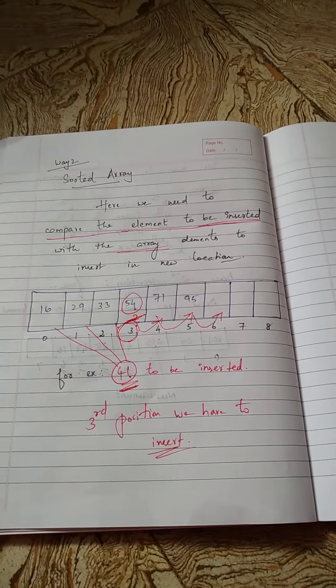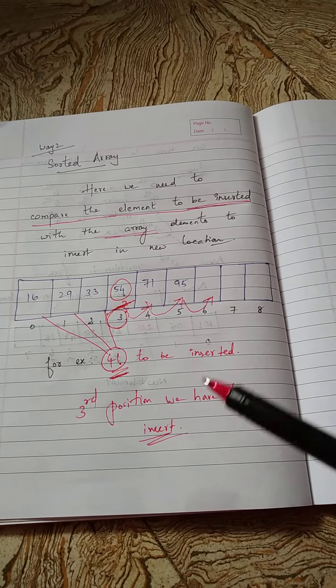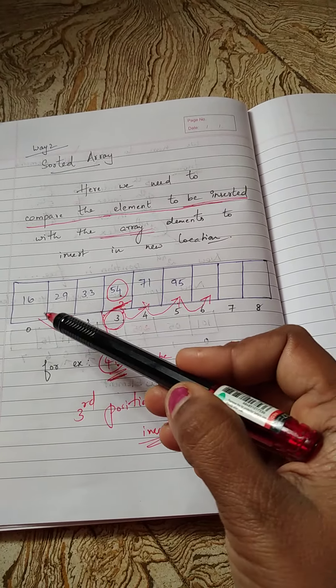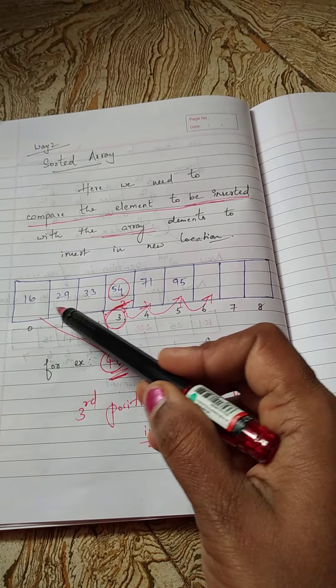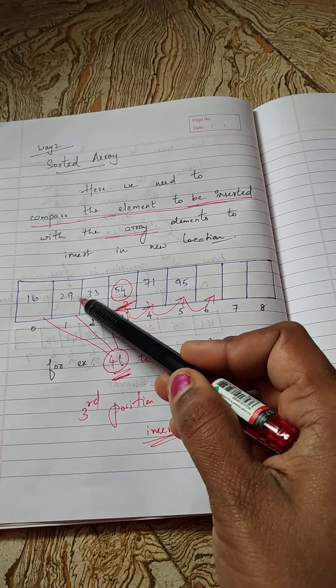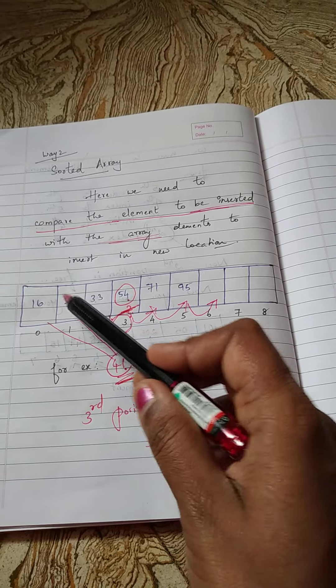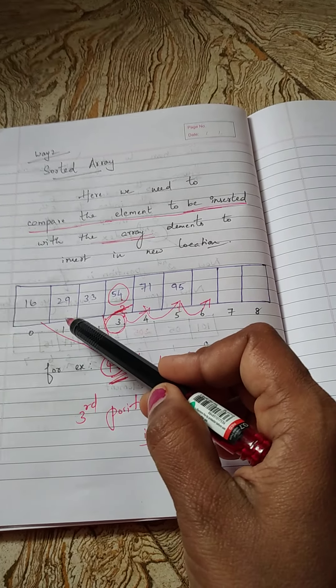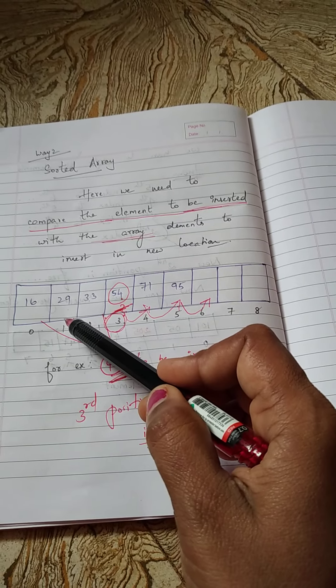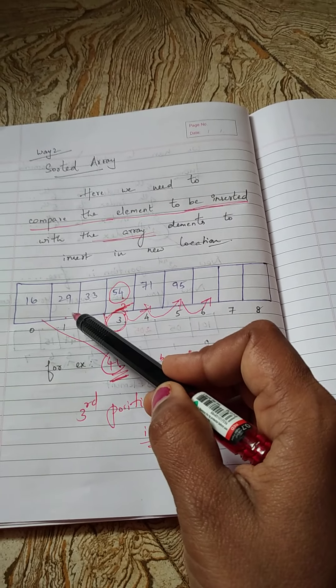Now imagine a situation for deletion. If you want to delete some element, for example in the same exercise you want to delete 29. What will you do? Deletion is easy. You can easily delete the element, but you may have empty space in between. So you have to occupy this empty space.